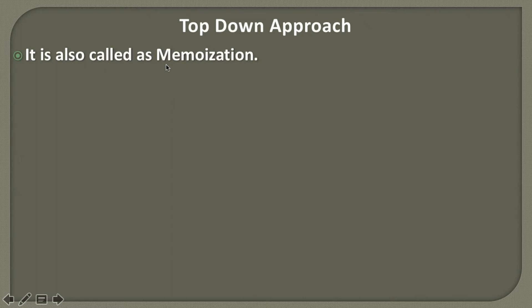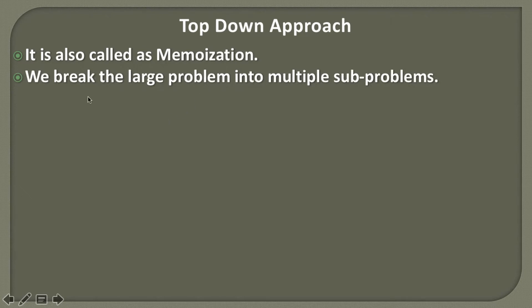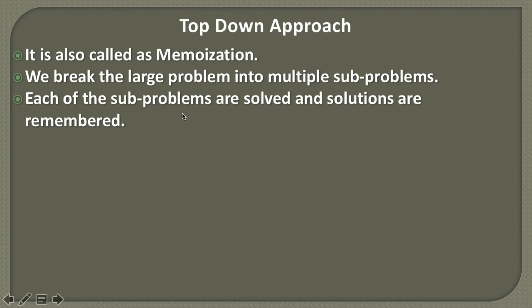So, what is the top-down approach? This method is also called memoization. What it means is that in this method, we break the larger problem into multiple sub-problems. Each of the sub-problems are solved and their solutions are remembered. By remembering the solutions, we treat it as memorization, and the term given to it is memoization, which means something we are remembering to reuse later.